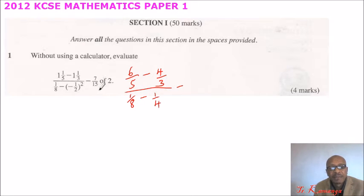7 over 15 of 2 is the same as 7 over 15 multiplied by 2. And that is 7 multiplied by 2. So it is 14 divided by 15.